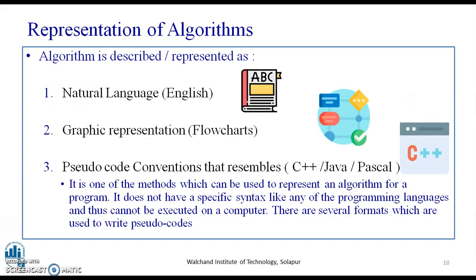Now, representation of an algorithm. One of the very important criteria. We say that algorithm is written or represented in n number of ways. The possible options for representing an algorithm is the natural language, the graphic representation that is called as the flowcharts, and also one of the important conventions is the pseudocode conventions that resemble the C++, Java, or Pascal program. An algorithm can be represented in any of these ways: natural language, the graphic representation that is the flowchart, and the pseudocode convention.